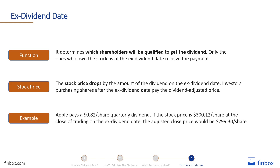For example, let's assume Apple pays an $0.82 a share quarterly dividend. If Apple's stock price is $300.12 a share at the close of trading on the ex-dividend date, the adjusted close price would be $299.30 a share.